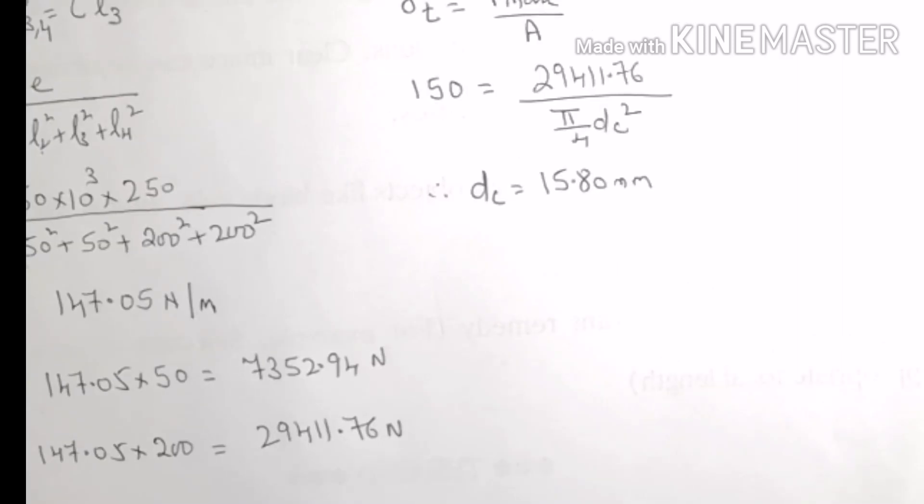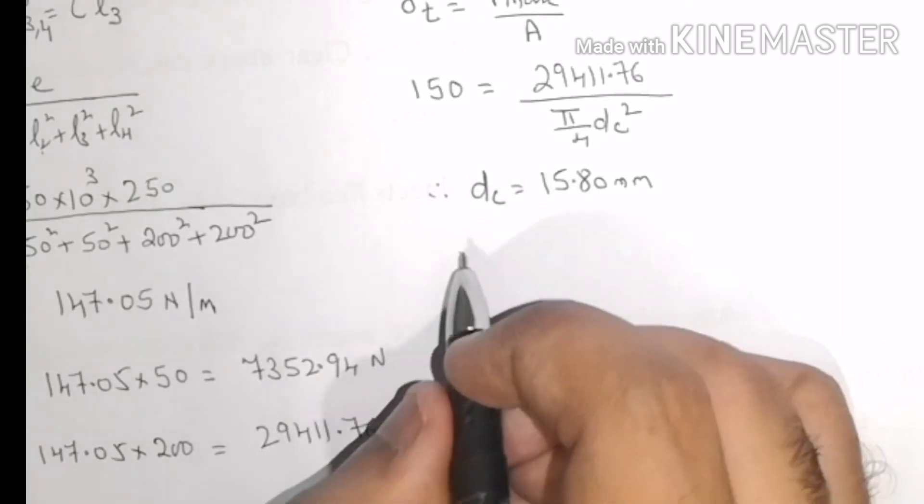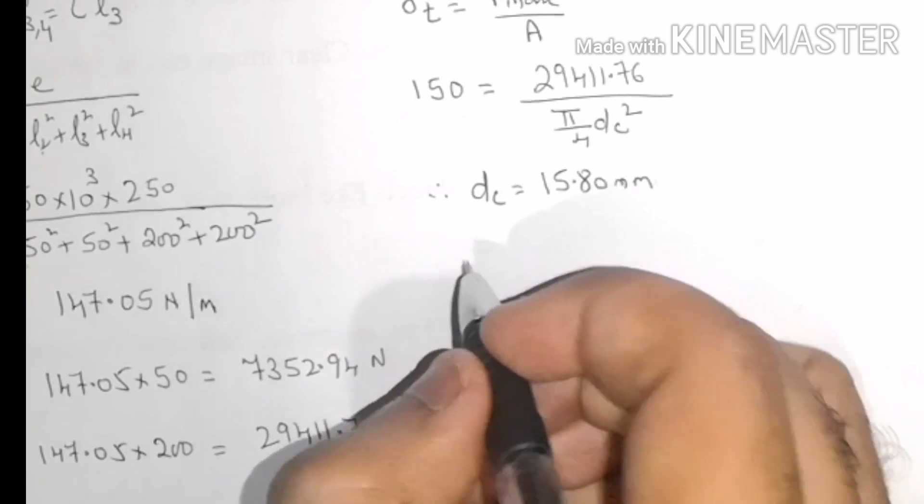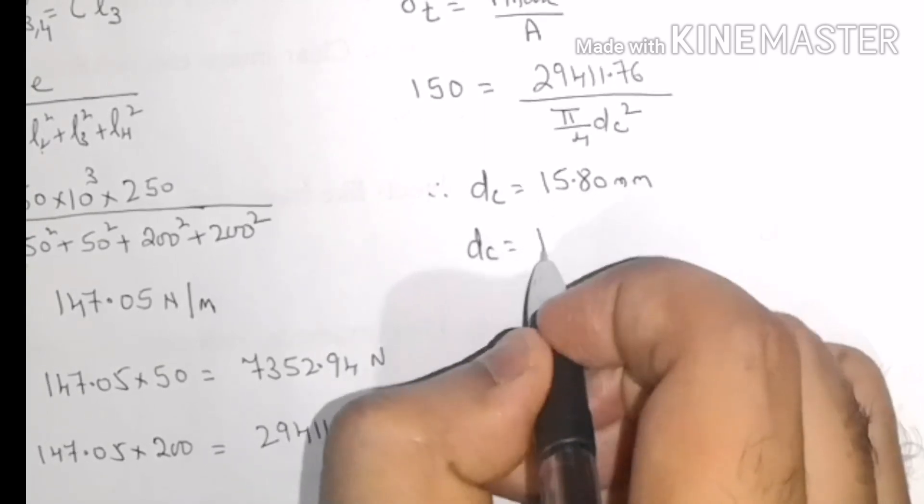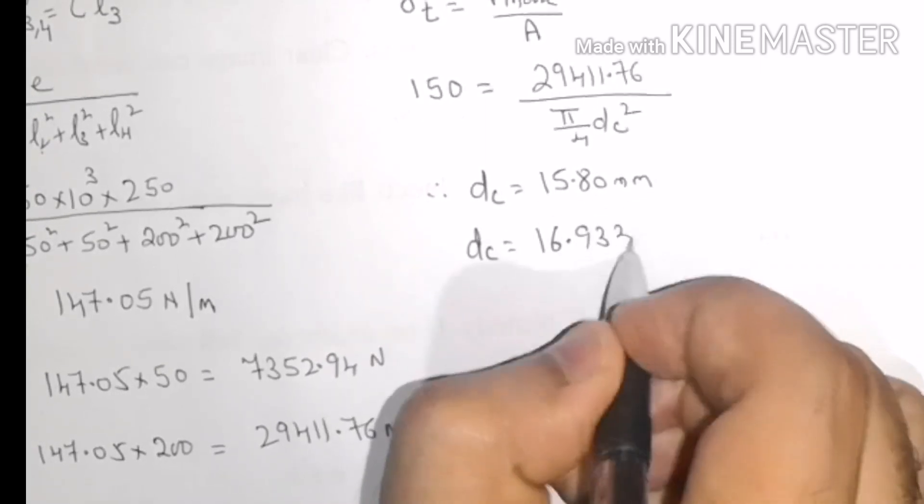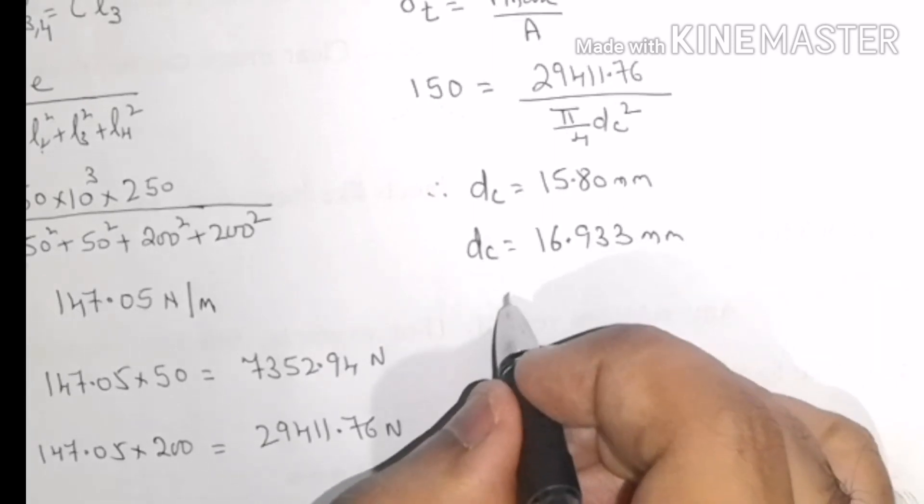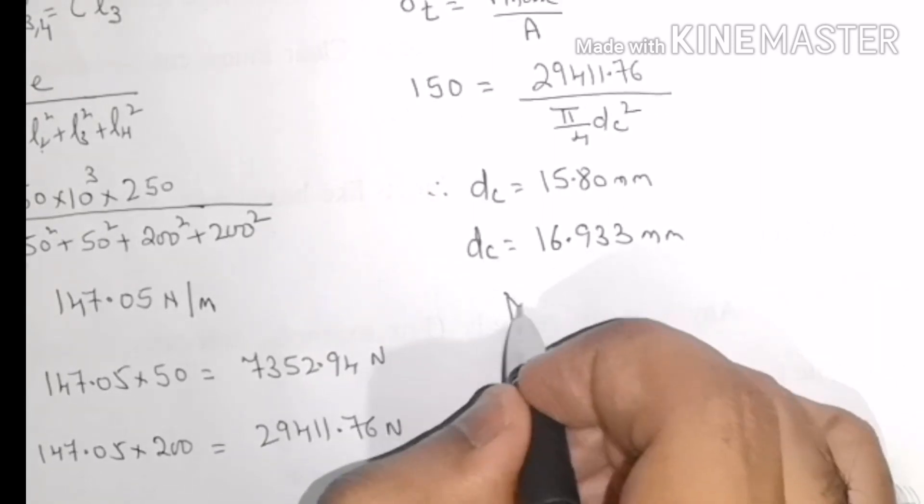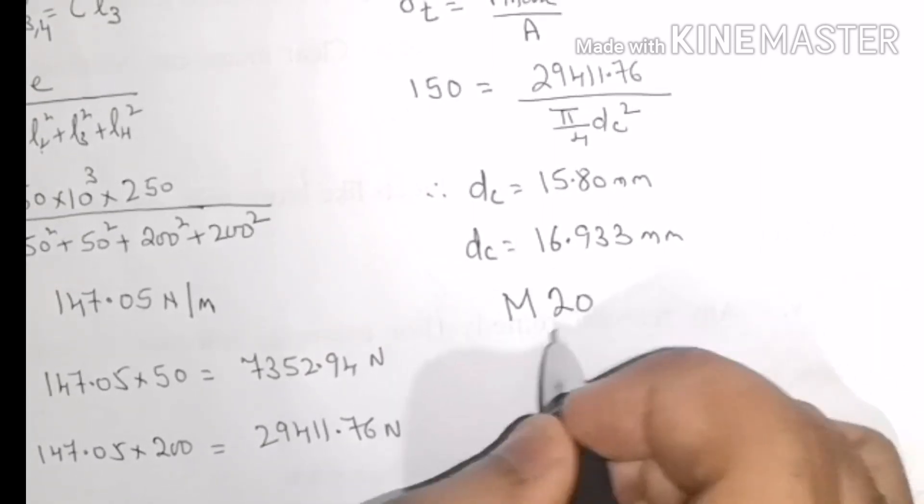Checking for the standard bolt available from the design data book, we get Dc = 16.933 mm, or the bolt to be used is an M20 bolt.